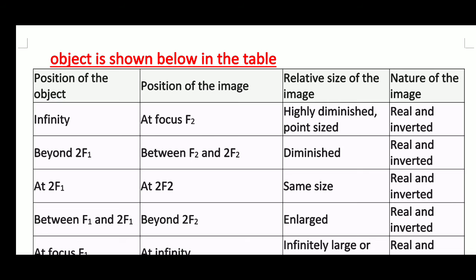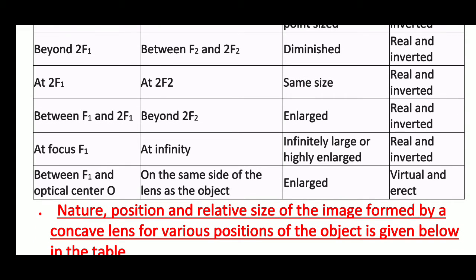Third, when the object is at 2f1, the position of the image will be at 2f2. The relative size will be the same — the object size and image size will be equal — and the nature of the image will be real and inverted. The next case is when the object is between f1 and 2f1: the image will be beyond 2f2, enlarged, real, and inverted. When the object is at focus f1, the image will be at infinity, infinitely large or highly enlarged, and real and inverted.